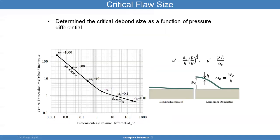Here is the closed-form solution. The way you use this: say you have a pressure level, you know the face sheet thickness, and you know the critical energy release rate for that material — that gives you P prime. Once you have P prime, you come to this curve and it tells you how much it deflects compared to the thickness and gives you A prime. Then you can solve for AC because you know H, P, and E. That gives you the critical flaw size. Given the pressure, given the thickness, given the fracture toughness of the material, find P prime; from P prime find A prime; then calculate AC, the critical flaw size.